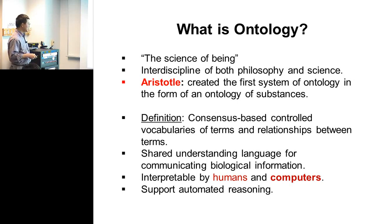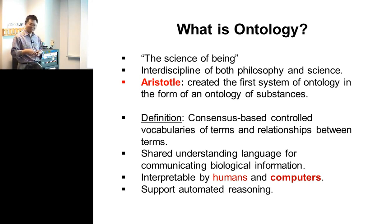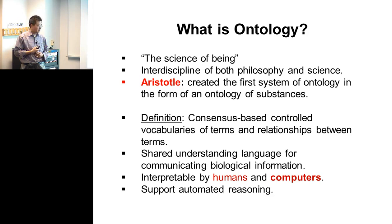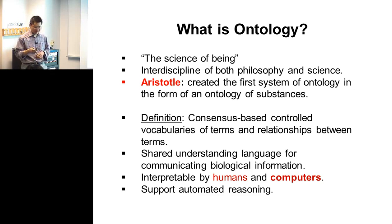Another key point of ontology is that you have to describe things in formal language — so computers can understand it. Because nowadays we really like to have computers understand things so they can handle bigger data. Ontology can also support reasoning, so you can do all kinds of reasoning. I'll show you some examples later.